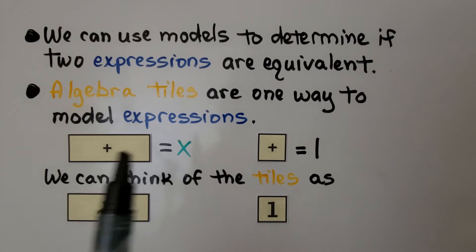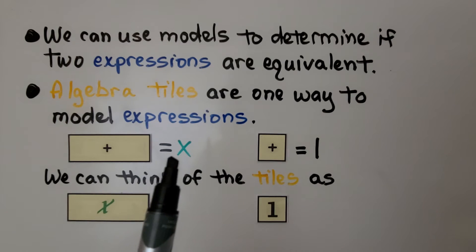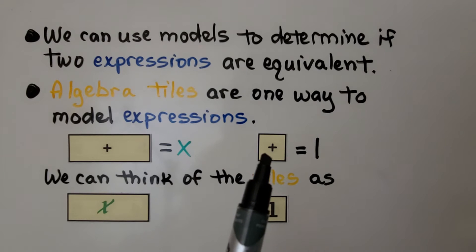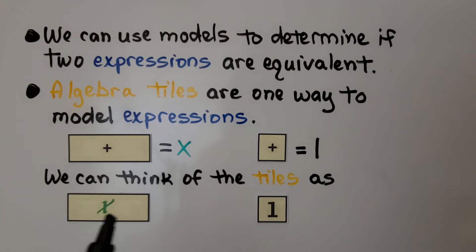We've got a big rectangle like this that's going to be our variable, and then a square to represent one. And we can think of this rectangle as the variable x, and this tile as one.